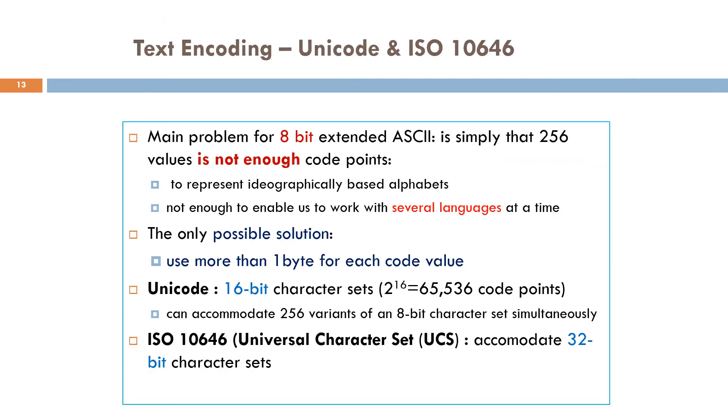Extended ASCII can only represent up to 256 different characters. The limitation on the number of character sets means representing character sets for several different language structures is not possible. The solution to overcome extended ASCII limitation is by using more than one byte for each code value. Therefore Unicode and ISO 10646, Universal Character Set UCS, were primarily invented to overcome this problem. Unicode can accommodate 16-bit character sets, while ISO 10646 UCS can accommodate up to 32-bit character sets.